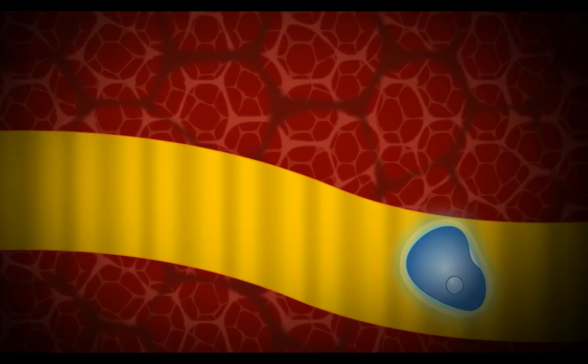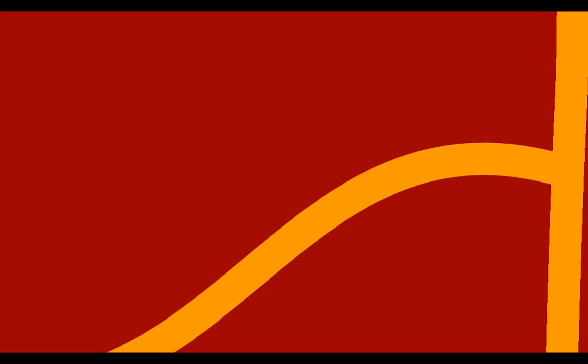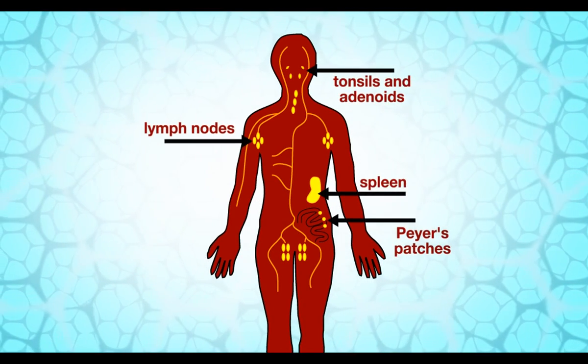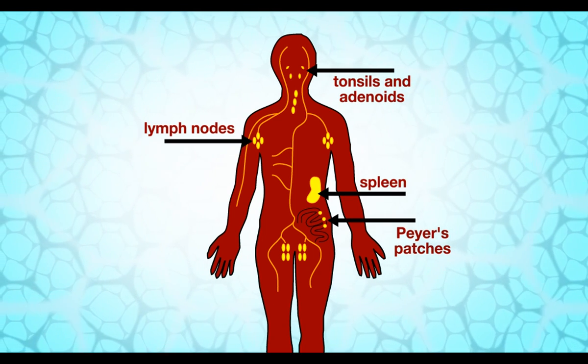When the macrophage bearing an antigen enters the lymphatic system, it circulates towards the lymphoid organs which include the spleen, tonsils, adenoids, Peyer's patches, and lymph nodes.